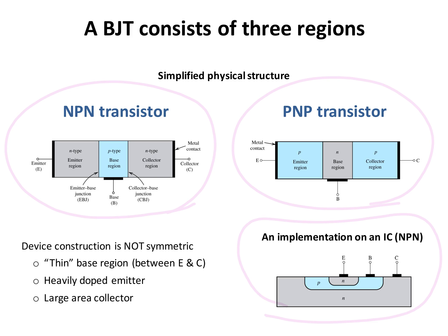The base region between the emitter and the collector is thin. The emitter region is heavily doped — heavily doped means it is an N-type semiconductor with a large concentration of dopants. The collector has a large area.